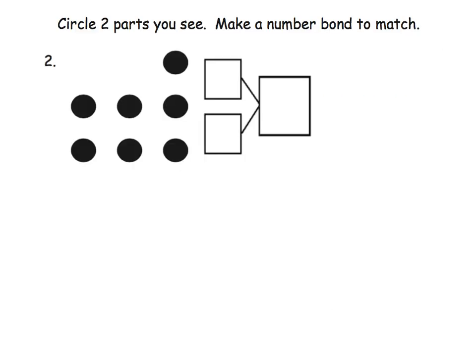So on this example, it says circle two parts that you see, and then make a number bond to match. So parents and teachers, there's no rule for how we want our students to see these dots. One example might be they might see four dots here and three dots here, in which case their number bond might look something like three and four for a total of seven. Now, what we want them to do is to count on. So we want them to see one of these collections. Let's say we start with the four, and then we count on from four. So we say four, five, six, seven.